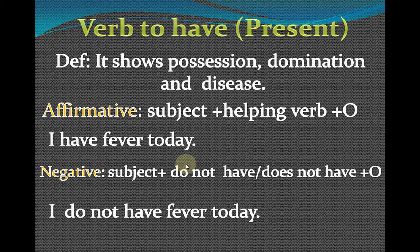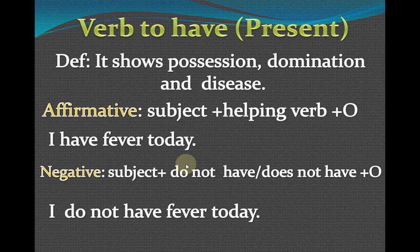Hello friend, today we are going to discuss 'what to have present.' We have already discussed 'to have past.' Today we are going to discuss 'what to have' and we can say 'has' and 'have.' In simple words, it shows position, domination, and indices. Whenever we have to show position and domination, we make sentences in 'what to have present.' The definition is the same as in the past — it shows status, position, domination, and disease. The formula for a simple sentence is: subject plus helping word plus object.